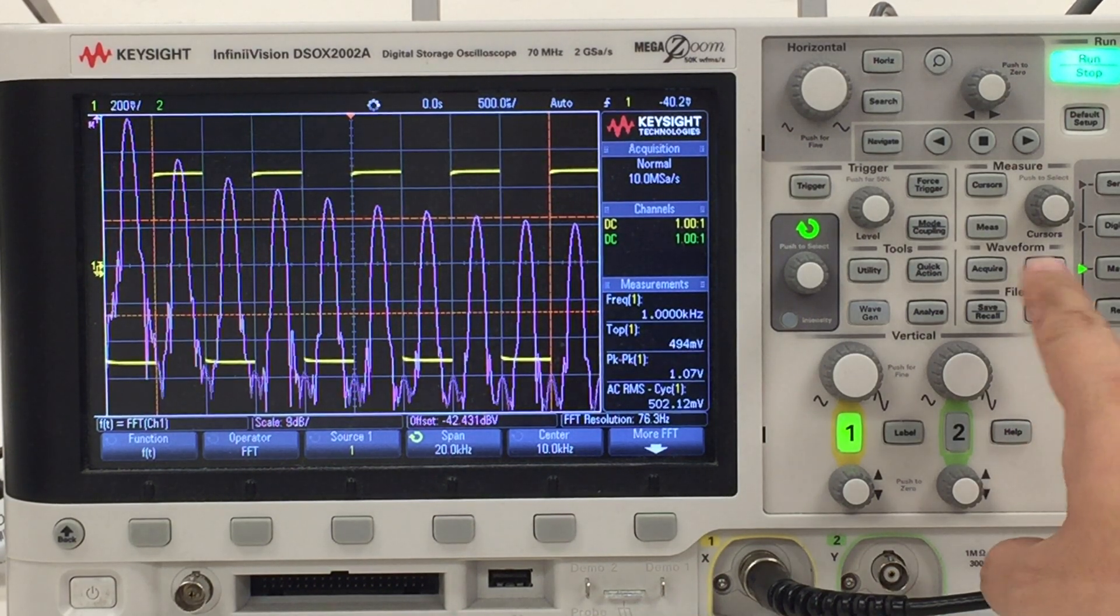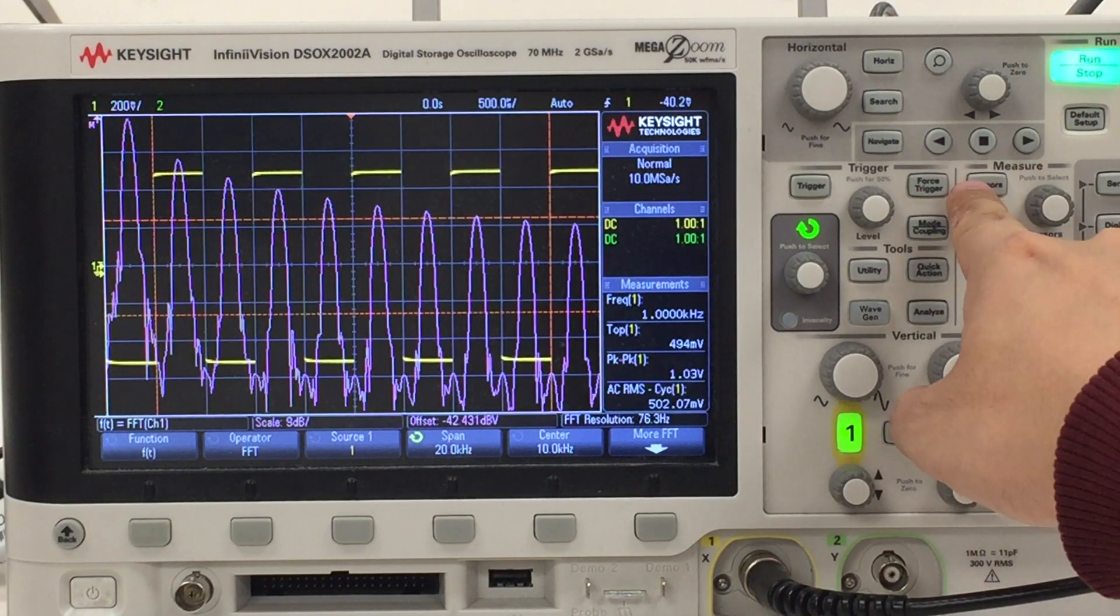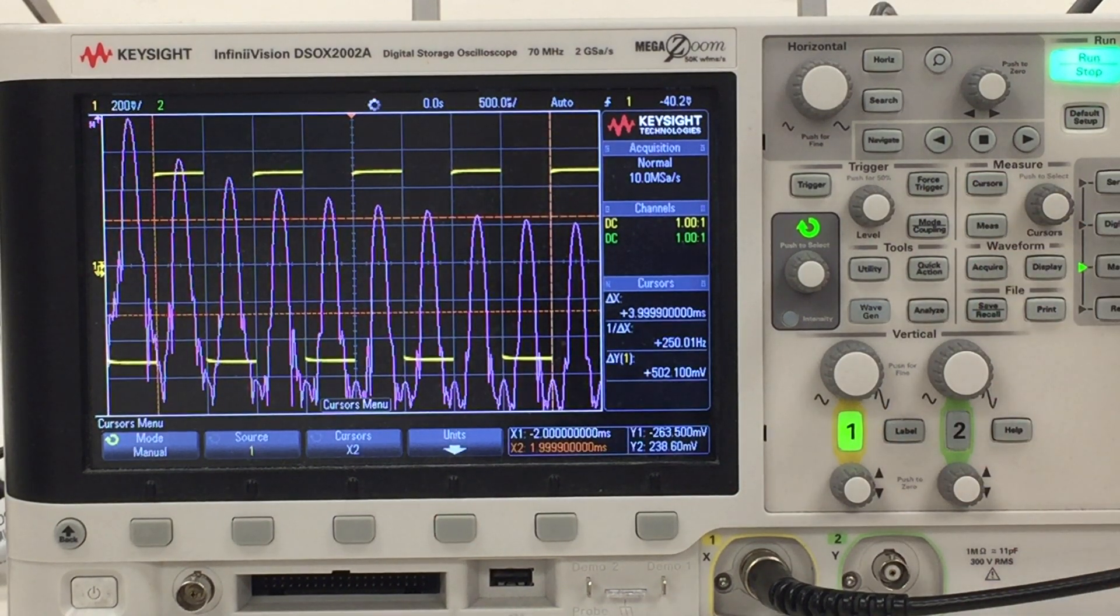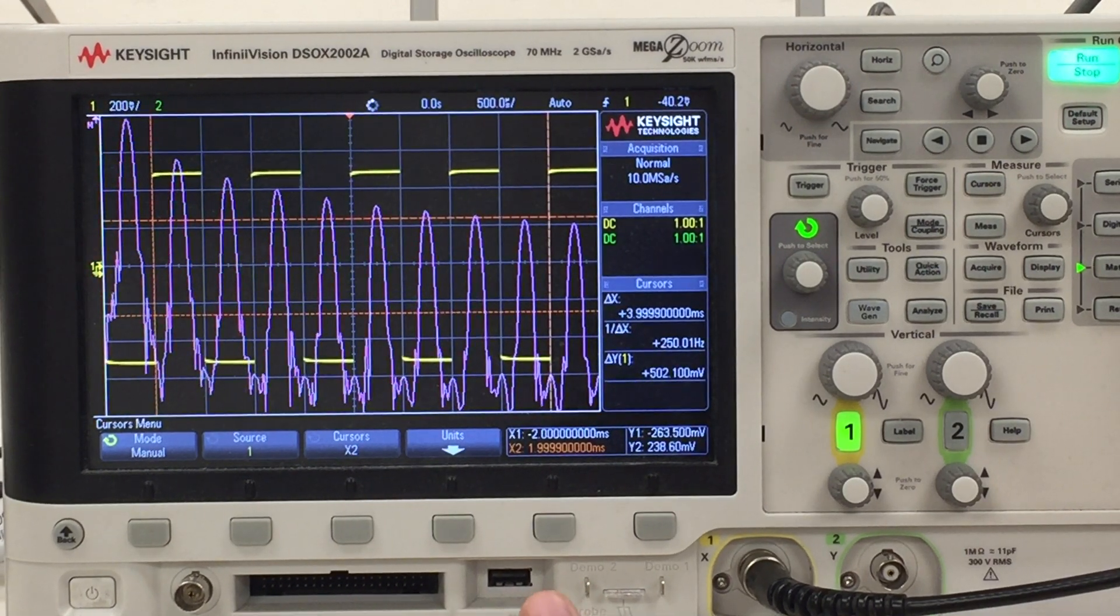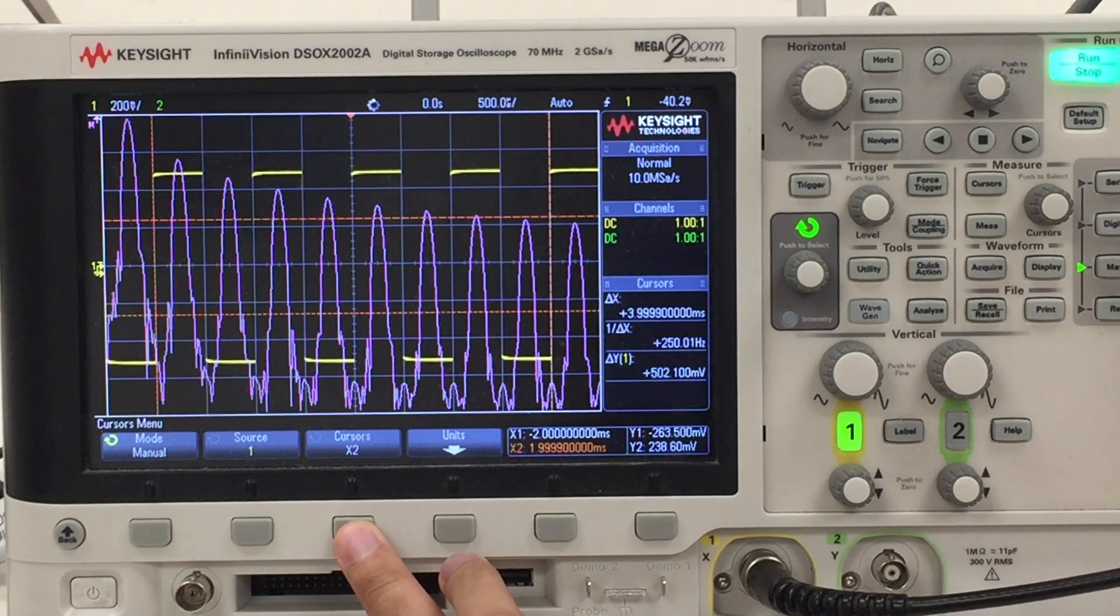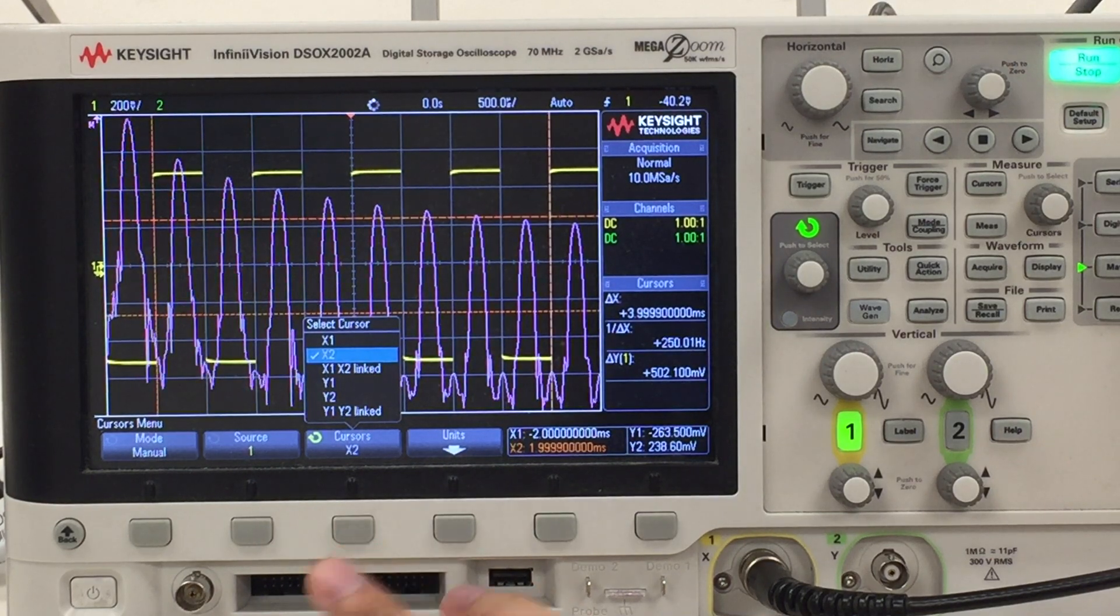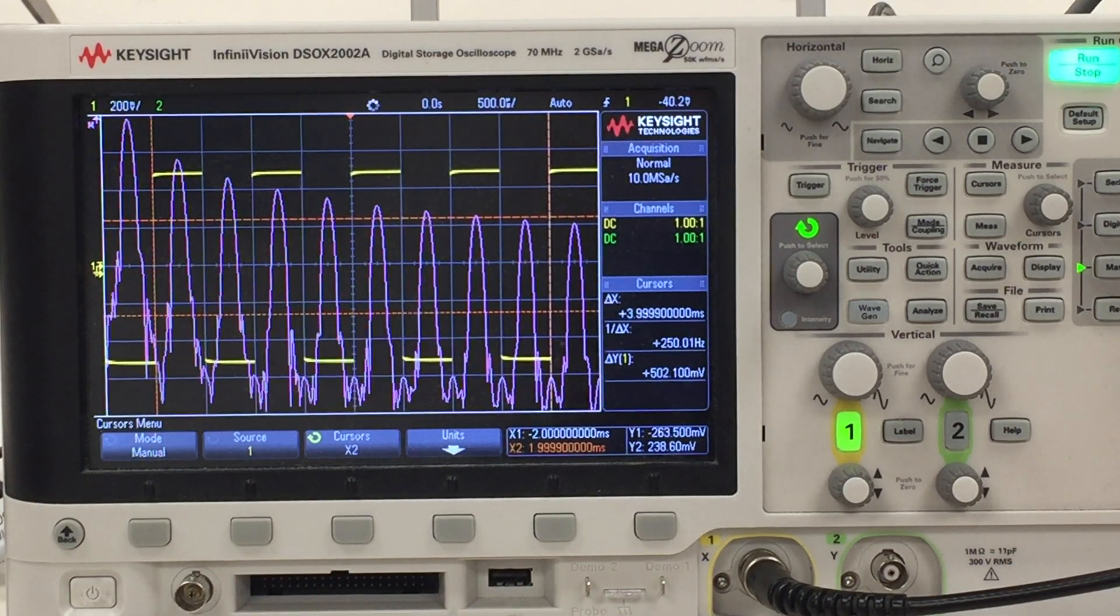So the way to do this is you go to Cursors here. Let's first verify the frequency of these peaks so that we want Cursors on the x-axis. Remember, x-axis is in frequency.